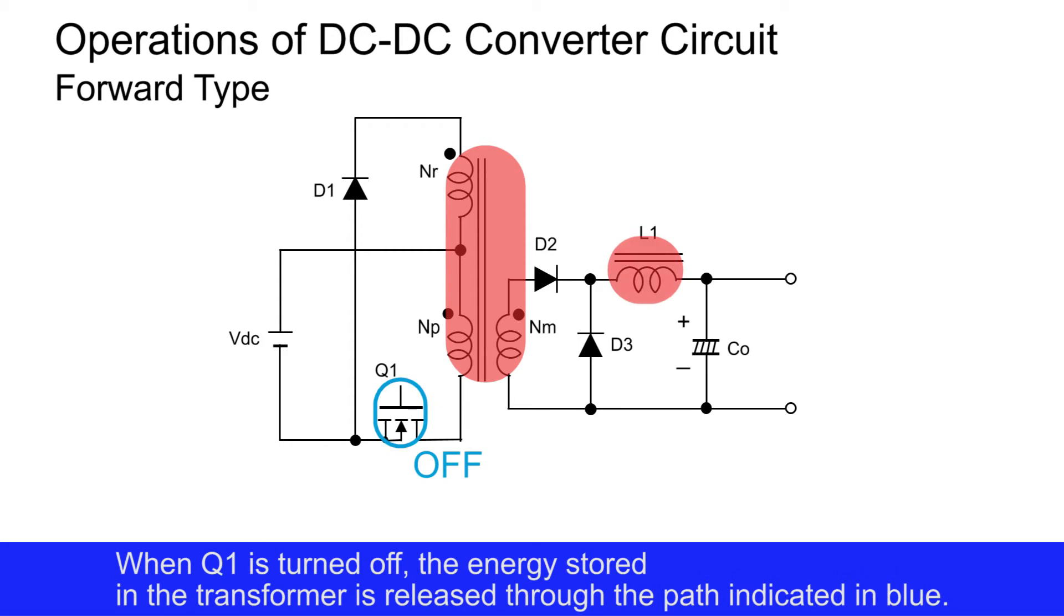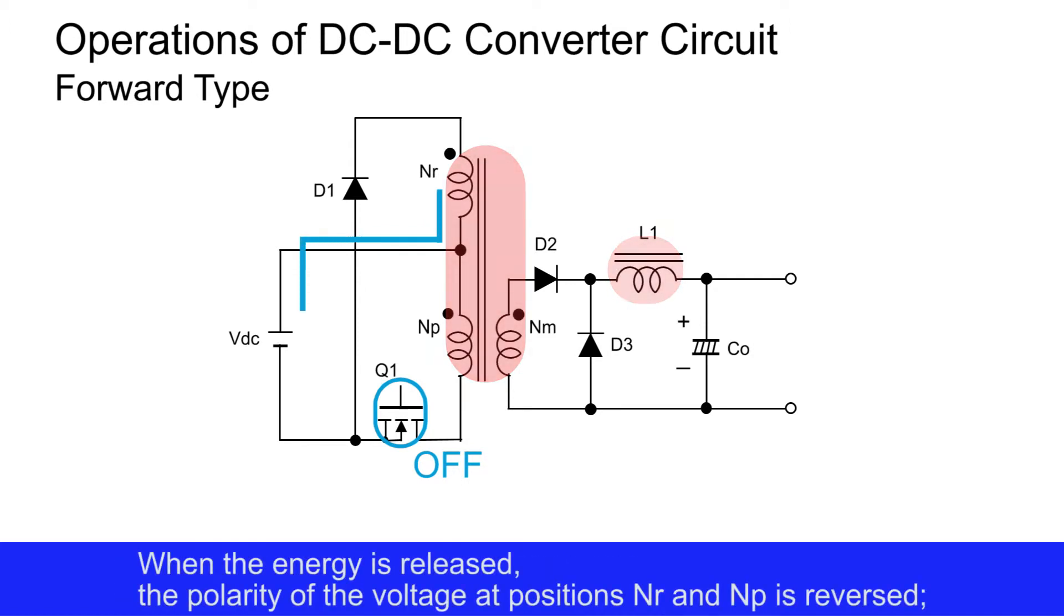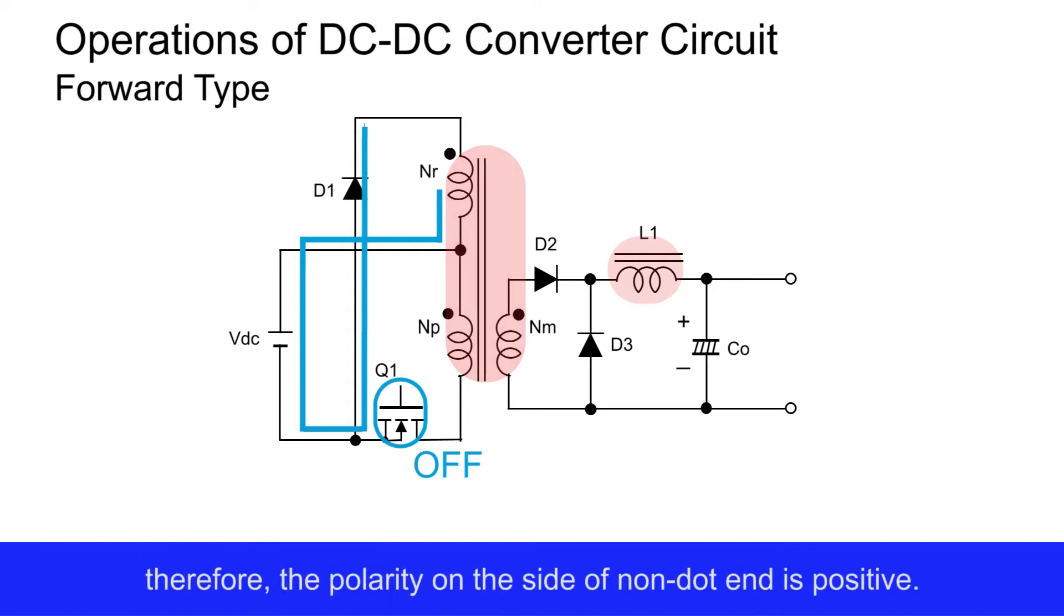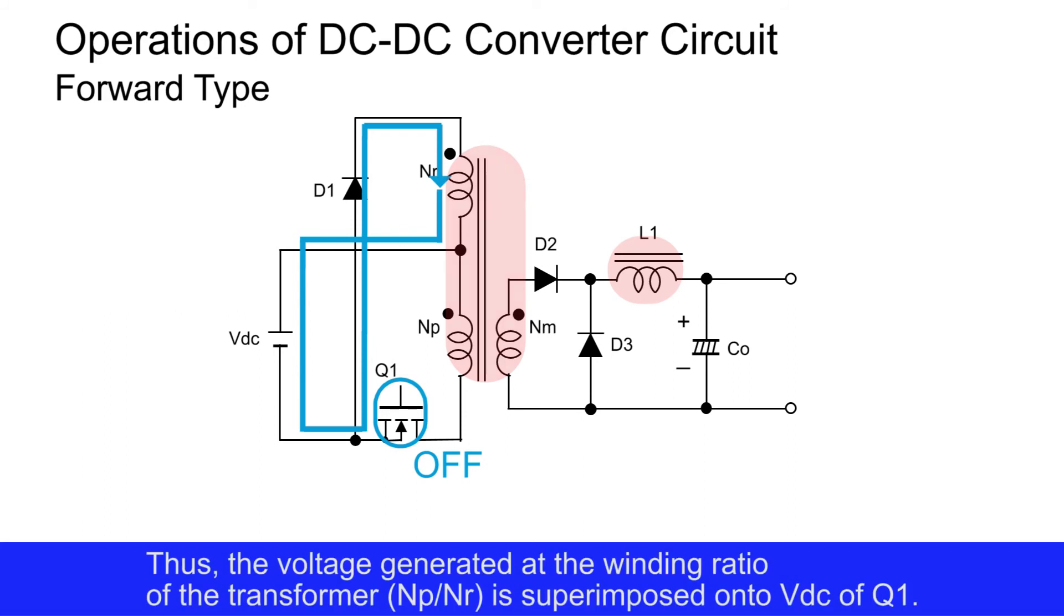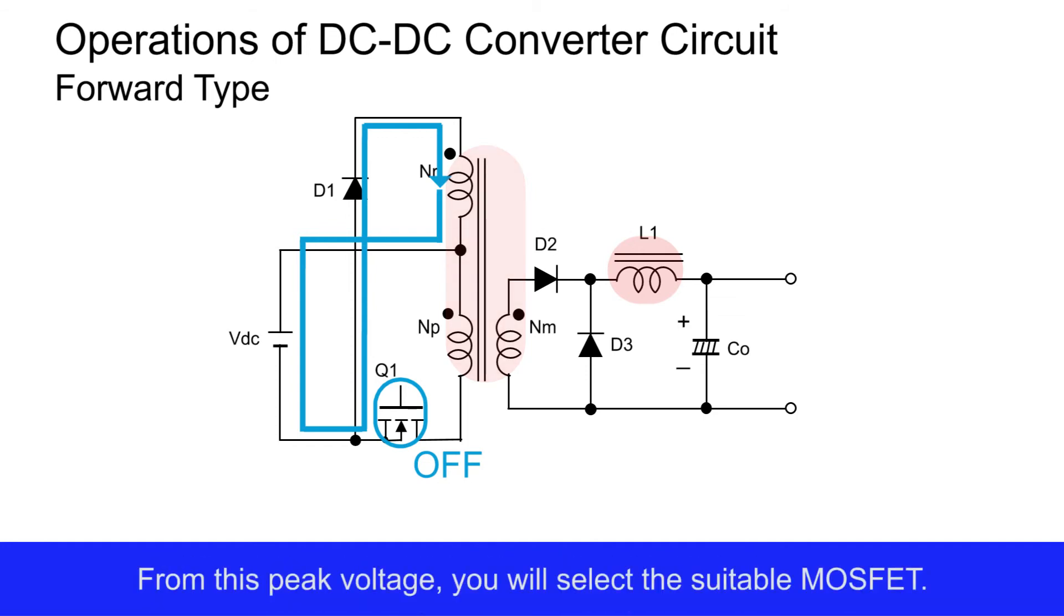When Q1 is turned off, the energy stored in the transformer is released through the path indicated in blue. When the energy is released, the polarity of the voltage at positions nr and np is reversed. Therefore, the polarity on the side of the non-dot end is positive. Thus, the voltage generated at the winding ratio of the transformer is superimposed onto Vdc of Q1. From this peak voltage, you will select the suitable MOS FET.